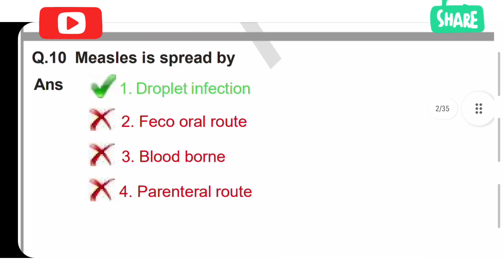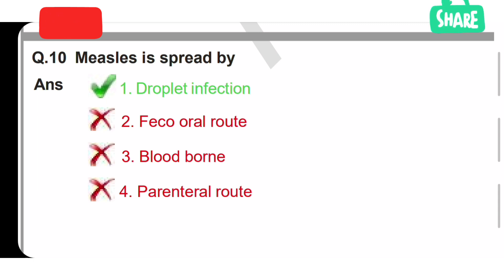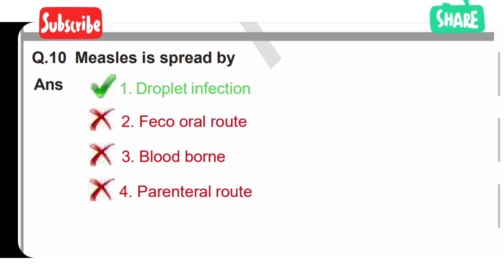Tenth question: measles is spread by. Option 1 is droplet infection, Option 2 is feco-oral route, Option 3 is blood-borne, Option 4 is parenteral route. The correct answer is Option 1 — measles is spread by droplet infection.